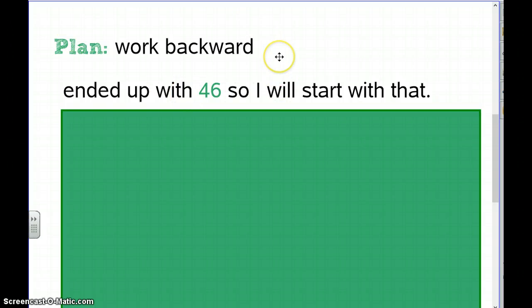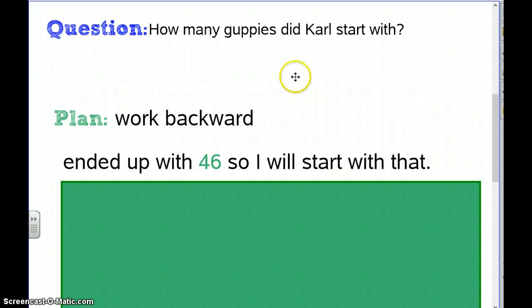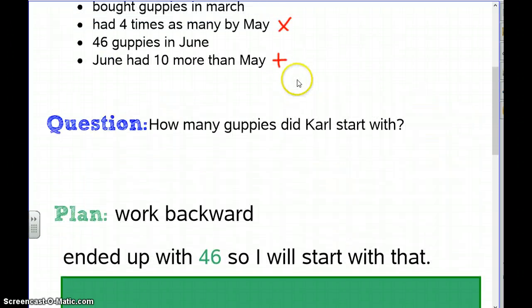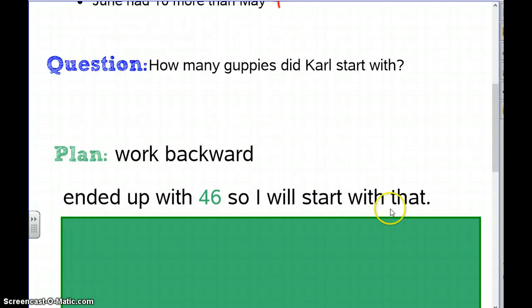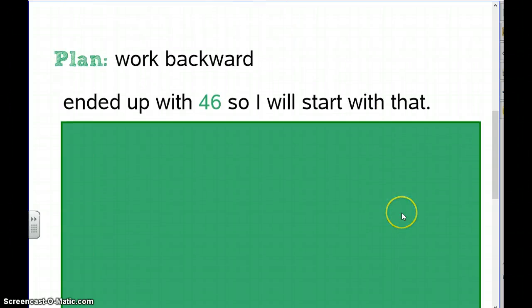My plan: the strategy we're going to use is to work backwards, because we know he had 46 in June, ten less in May, and May had four times as many as March. We'll start with what we know and work backward.